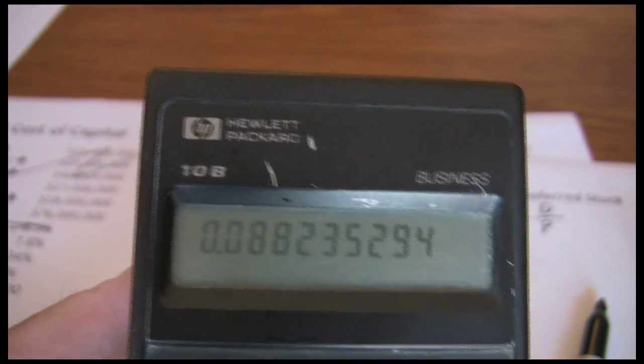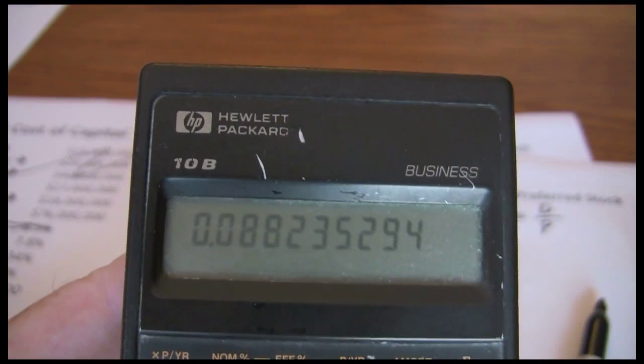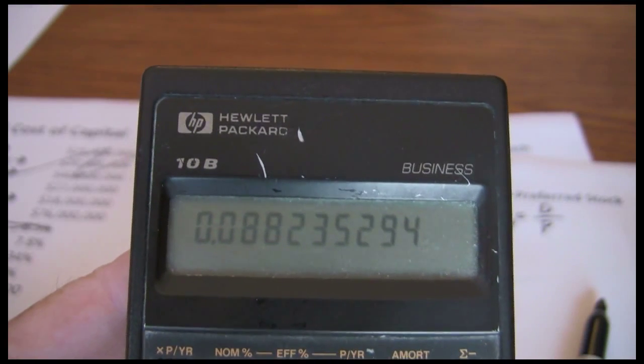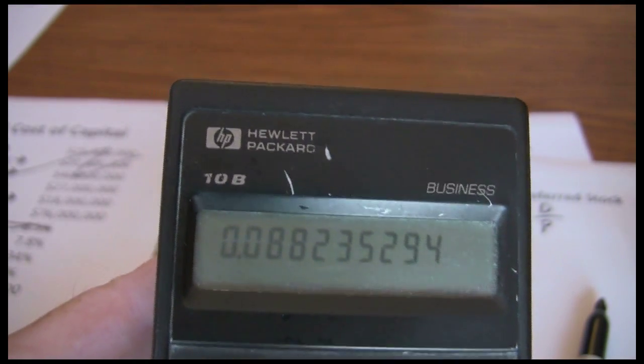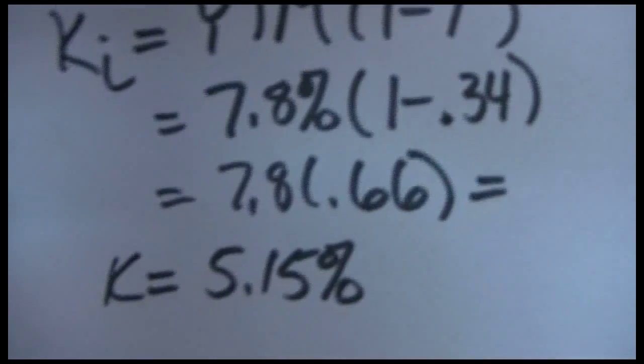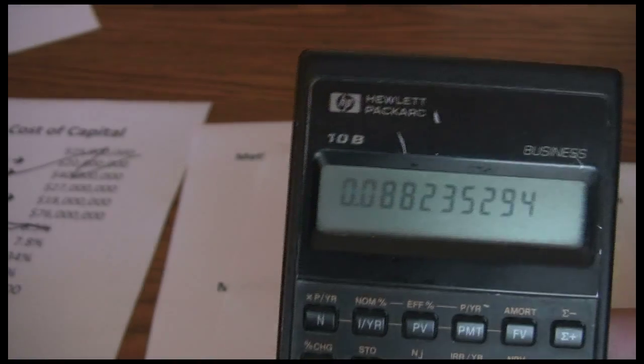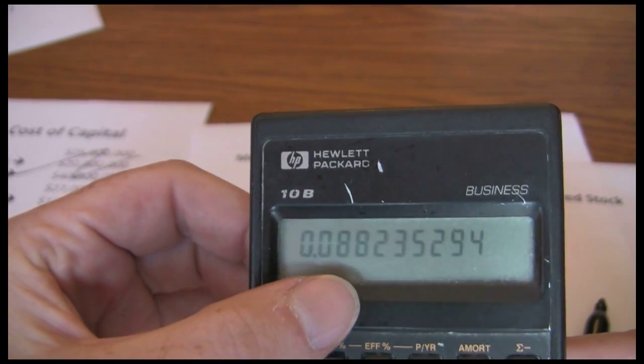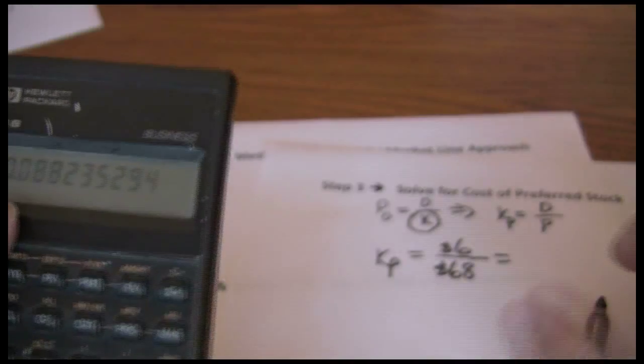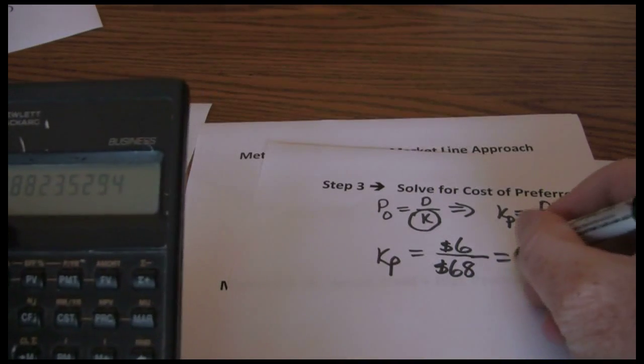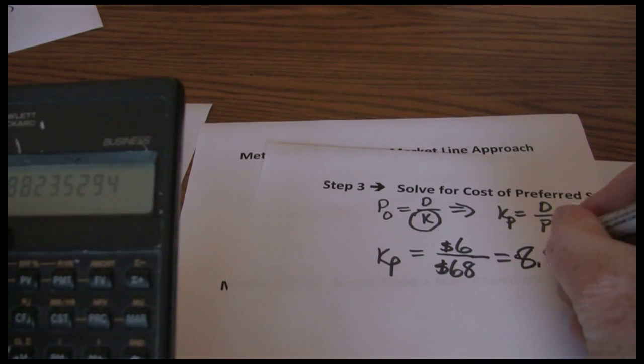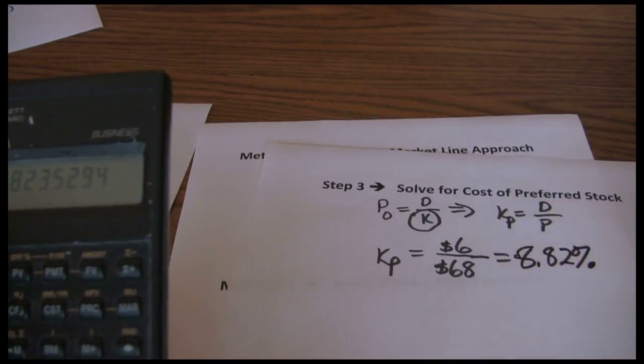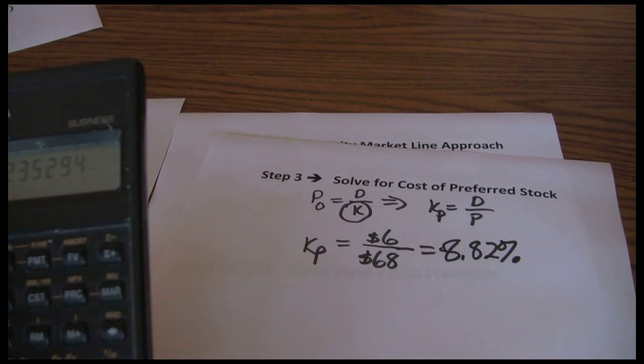Now we want to be careful here in that when we solved for the cost of debt, the after tax cost of debt, our answer was in percentage value. Remember we had 5.15%. Here this 0.0882 is in decimal. So we need to convert it to percent. 8.82% is the cost of preferred stock financing.